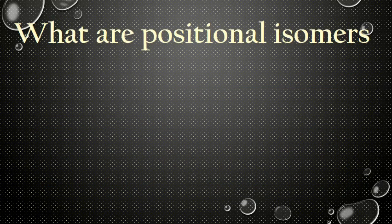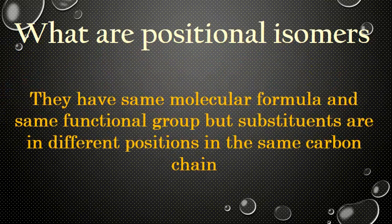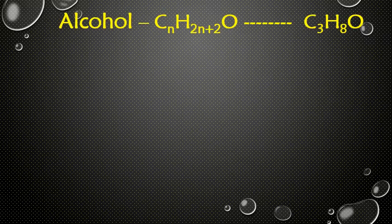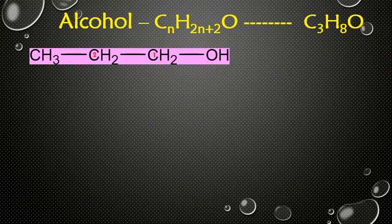Now let's see what positional isomers are. These isomers have the same molecular formula and the same functional group, but the substituents are in different positions on the same carbon chain. Let's take an alcohol with three carbon atoms. The molecular formula is C3H8O, and we can draw a primary alcohol with three carbons — named propanol.